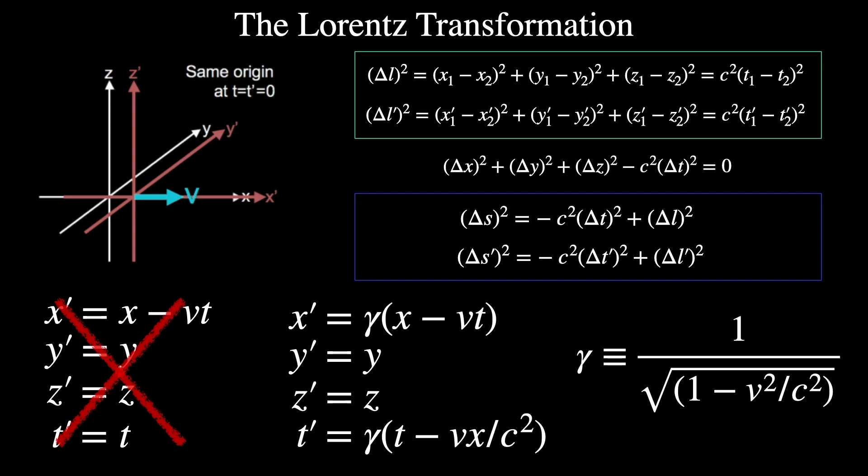Naturally, that distance is equal to the square of the speed of light times the difference in time between emission and reception. This will also be true in primeland.